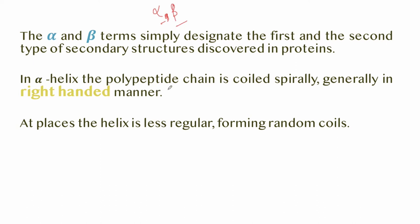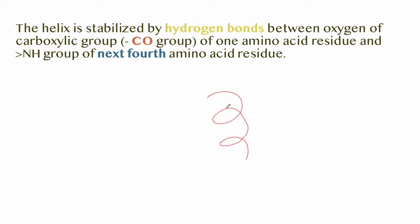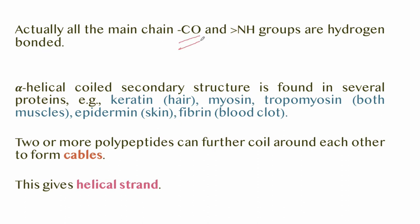In the alpha helix, the polypeptide chain is coiled spirally, generally in the right-hand manner. The helix is stabilized by hydrogen bonds formed between the oxygen of the carboxyl group of one amino acid residue and the NH group of the next fourth amino acid residue. All the main chain CO and NH groups are hydrogen bonded. Alpha helix coiled secondary structure is found in proteins such as keratin (found in hair).